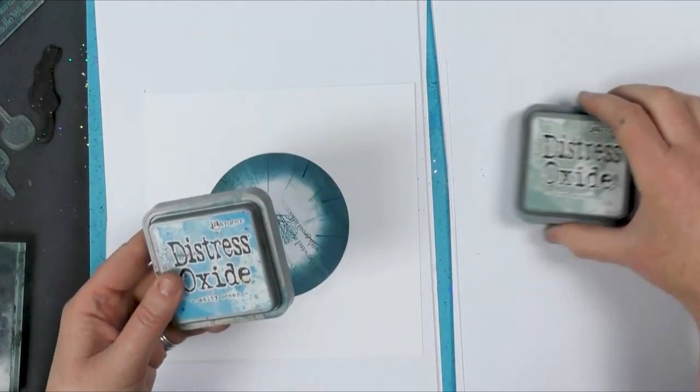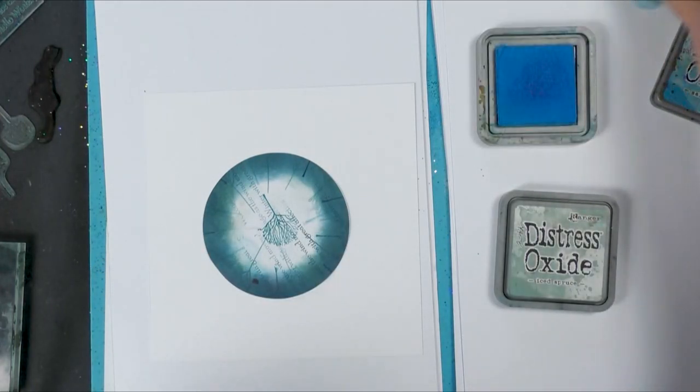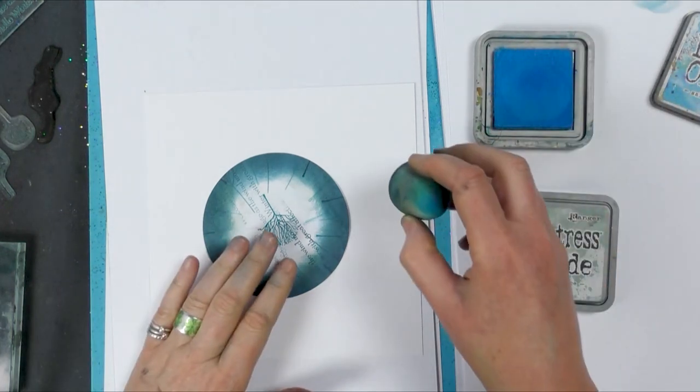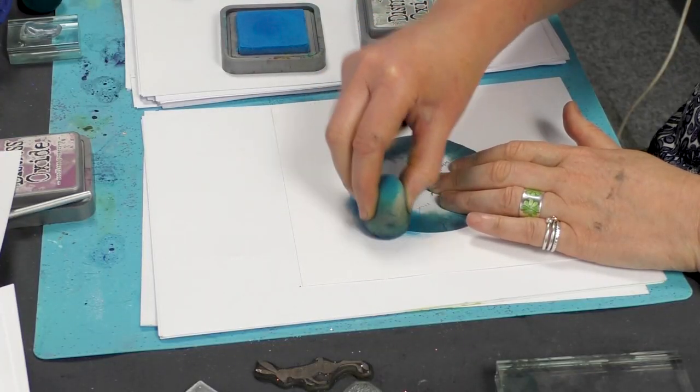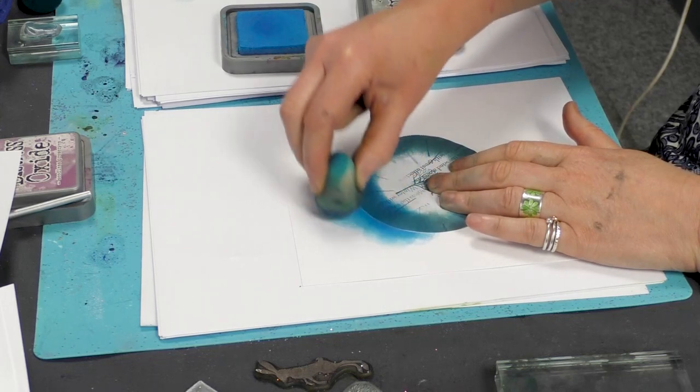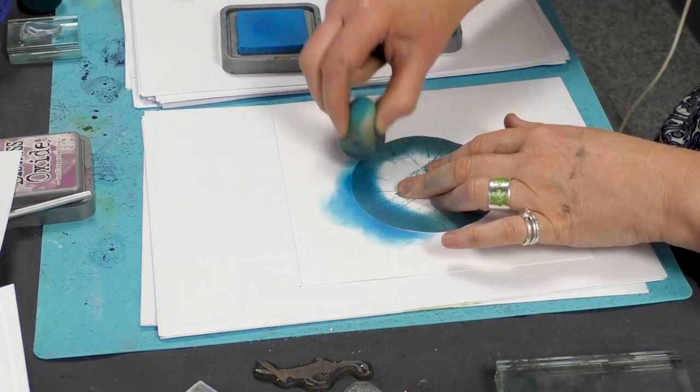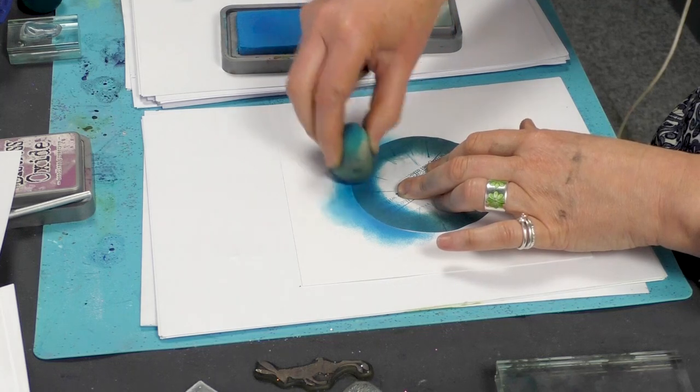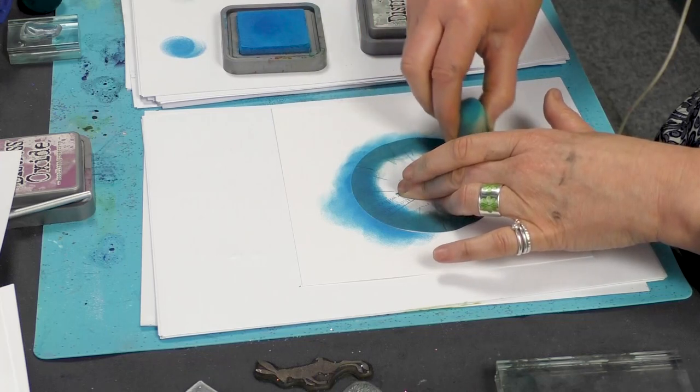I'm using two colors. This is Salty Ocean and Ice Spruce. So I'm going to start with the Ice Spruce and I'm going to just start working my way around the edge. Now, I'm going to add water to this so I'm not too worried about getting a really smooth finish.